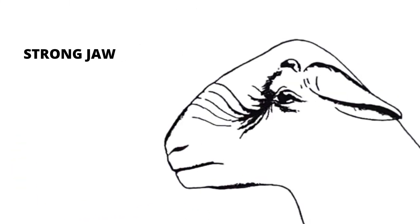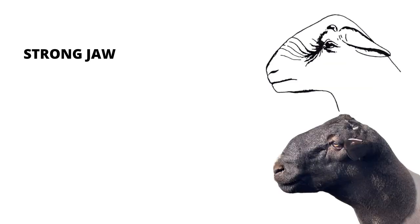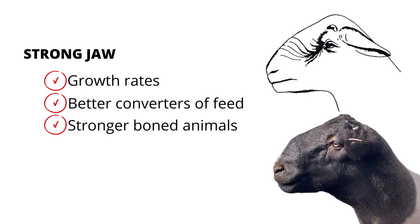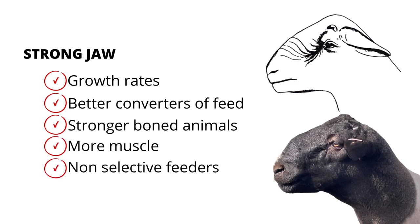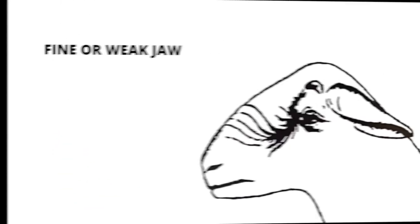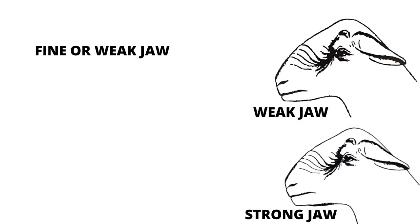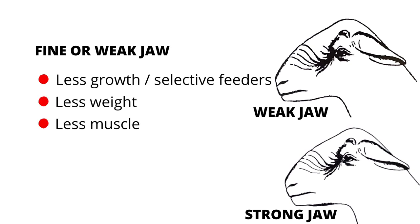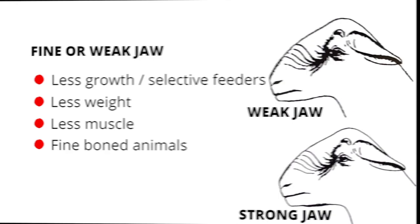And we want strong jaws. Strong jaws are directly correlated to better converters of feed, stronger boned animals, more muscled and non-selective feeders. Whereas when they are finer or weaker in the jaws, they have less growth, less weight, less muscle and finer boned animals.